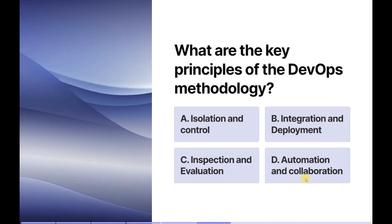Isolation and control is actually the opposite of what DevOps promotes — DevOps breaks down silos between development, operations, and other teams. Integration and deployment is a phase of the DevOps lifecycle, but not a core key principle. Inspection and evaluation are vital aspects of the DevOps lifecycle but not core principles. The last option — automation and collaboration — these are the key principles of DevOps methodology. So the correct answer is option D: automation and collaboration.